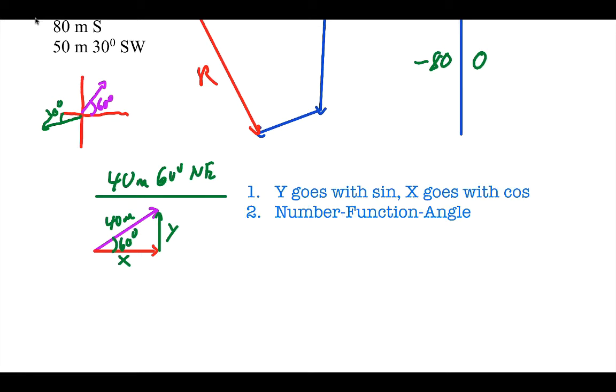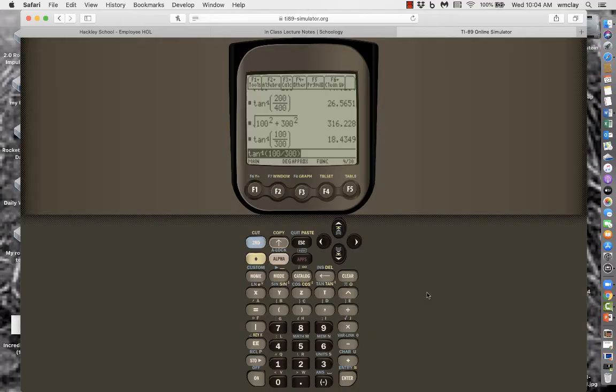Let's say I want to find the y component of this. Y is going to go with a trig function called sine. And what I mean by number function angle is literally the way you would write it down and type it in your calculator. The number is 40, the function because it's y is sine, and the angle is 60 degrees. That's literally how we're going to type it in our calculator. You would start off with 40, hit the second to bring up sine, and then 60, close parentheses. So that's 40 sine 60, and that gives me 34.6.